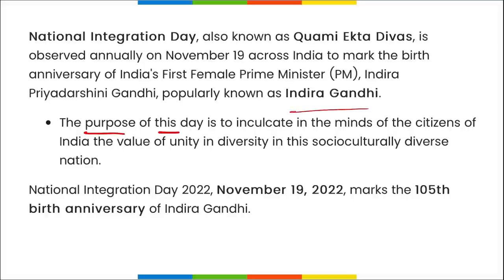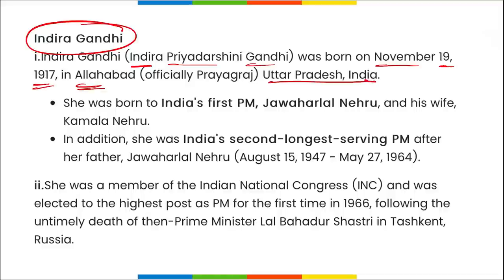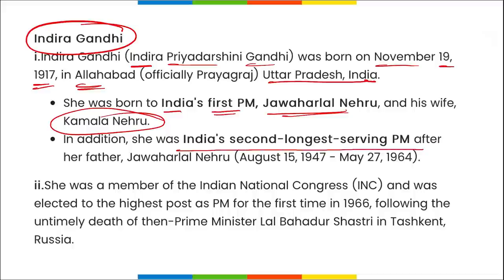Indira Gandhi was born on 19th November 1917 in Allahabad, Uttar Pradesh. She was the daughter of India's first Prime Minister Jawaharlal Nehru and his wife Kamala Nehru. Indira Gandhi became the first female Prime Minister of India. She was also India's second longest-serving Prime Minister after her father Jawaharlal Nehru, whose term was from 15th August 1947 to 27th May 1964. She was first elected as Prime Minister in 1966.